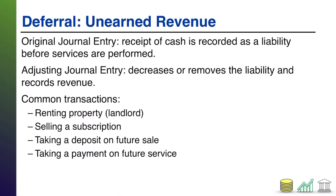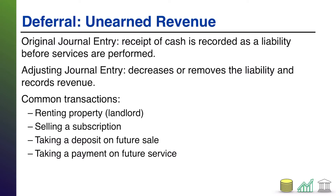Unearned revenue is a type of deferral. With deferrals, there's always an original journal entry, and then there's the adjustment to be made later, which is the adjusting journal entry.